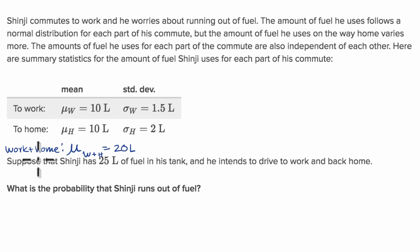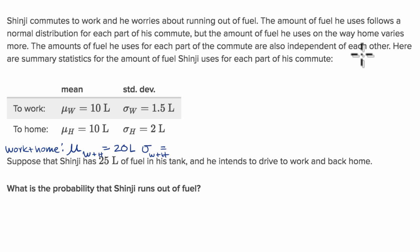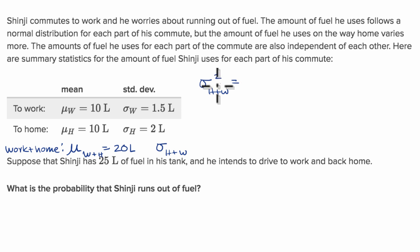He will use a mean of 20 liters for the round trip. Now for the standard deviation of home plus work, you can't just add the standard deviations going and coming back. But because the amount of fuel going to work and the amount of fuel coming home are independent random variables, we can add the variances. And only because they are independent can we add the variances. So the variance of the combined trip equals the variance of going to work plus the variance of going home.